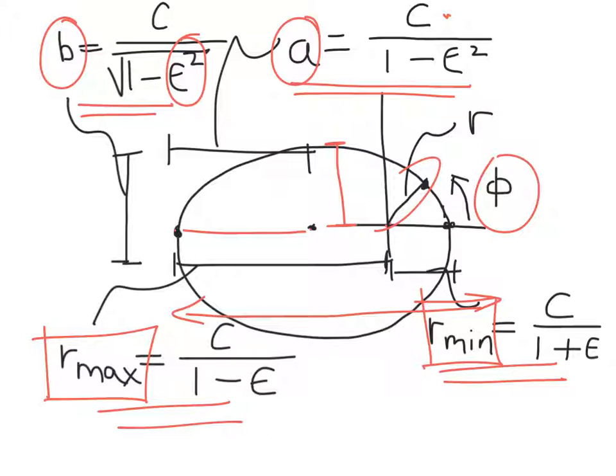Basically how big a difference we get between r max and r min. So the bigger epsilon gets, the bigger the difference between r min and r max, and the more and more stretched out our elliptical orbit gets.